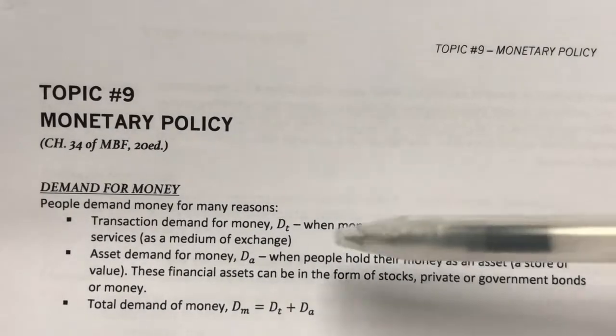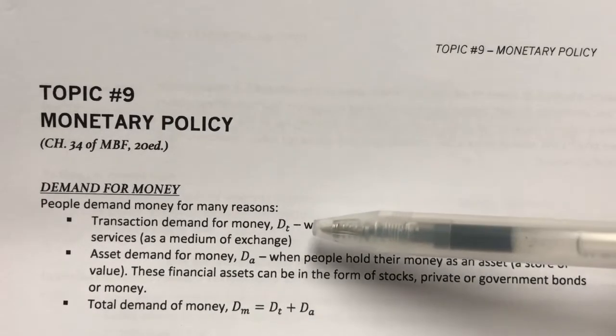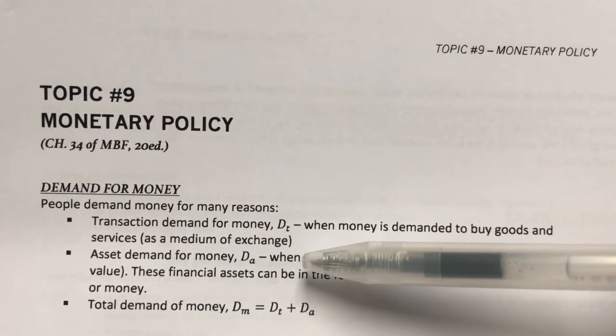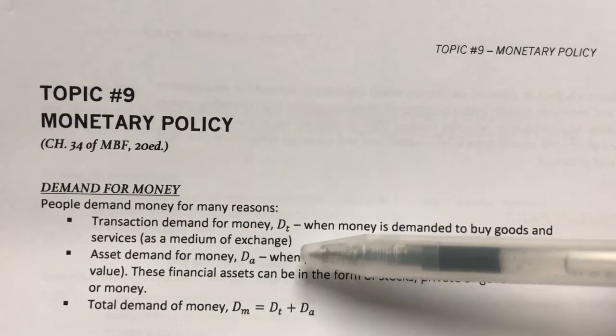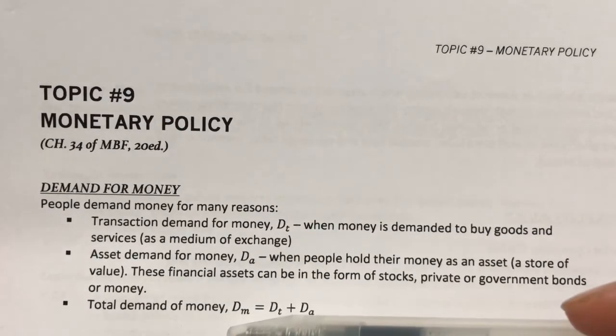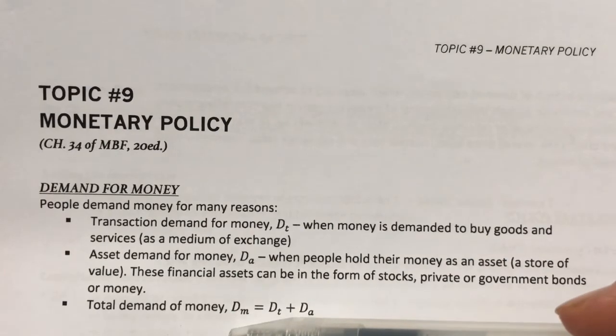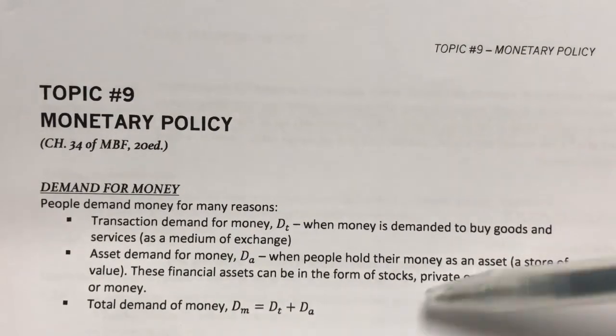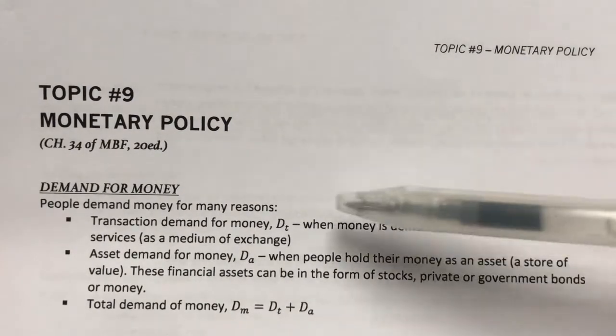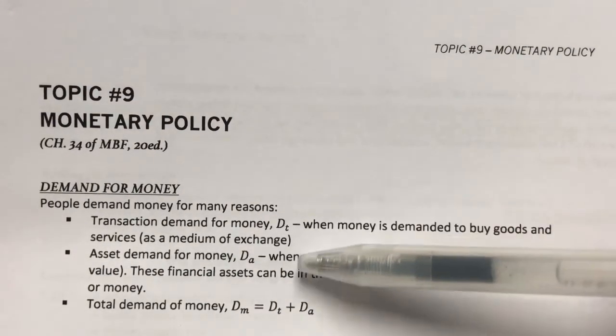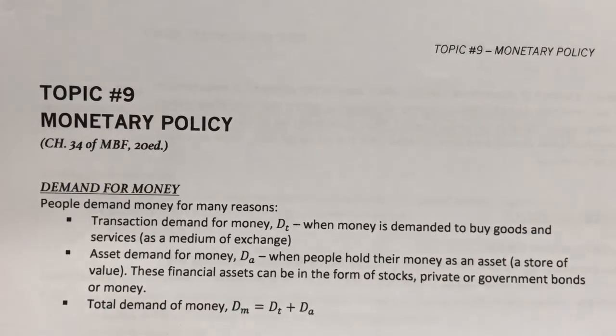Combining both the transaction demand for money and the asset demand for money will give us the total demand for money. In other words, DM is a horizontal summation of DT and DA.